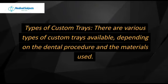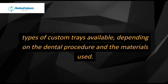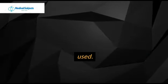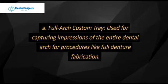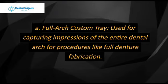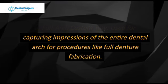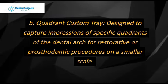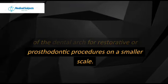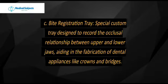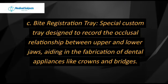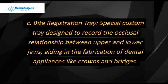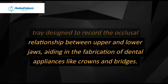Types of custom trays. There are various types of custom trays available, depending on the dental procedure and the materials used. These include: full arch custom tray, used for capturing impressions of the entire dental arch for procedures like full denture fabrication; quadrant custom tray, designed to capture impressions of specific quadrants of the dental arch for restorative or prosthodontic procedures on a smaller scale; and bite registration tray, a special custom tray designed to record the occlusal relationship between upper and lower jaws, aiding in the fabrication of dental appliances like crowns and bridges.